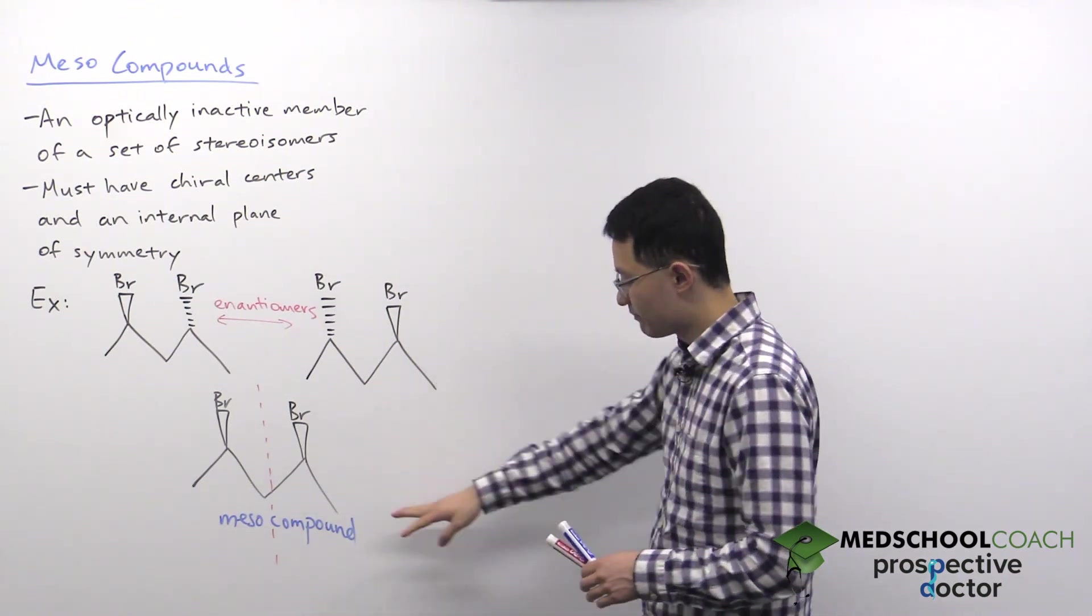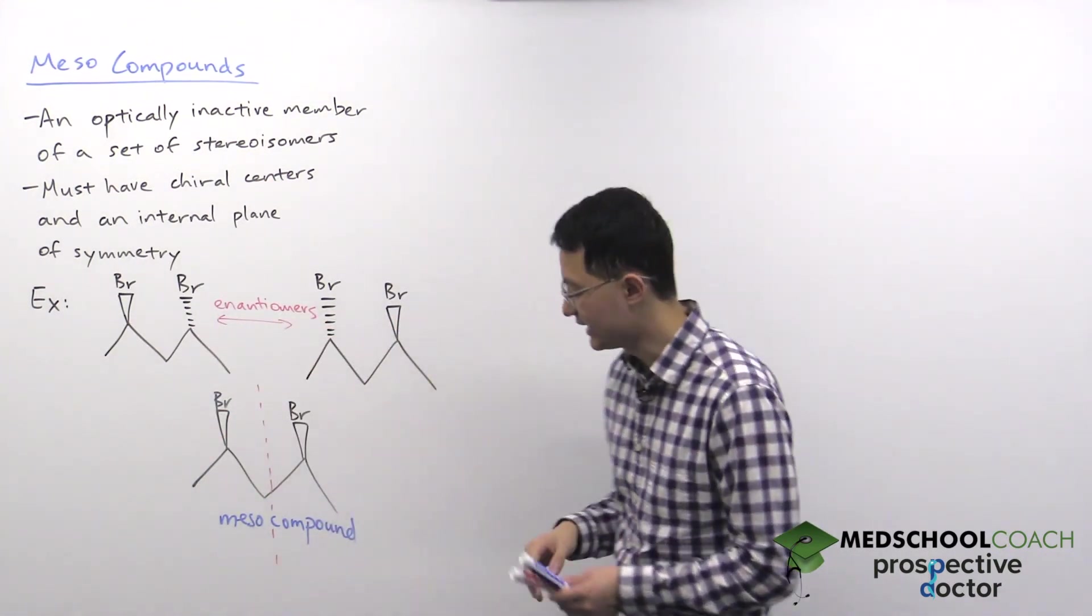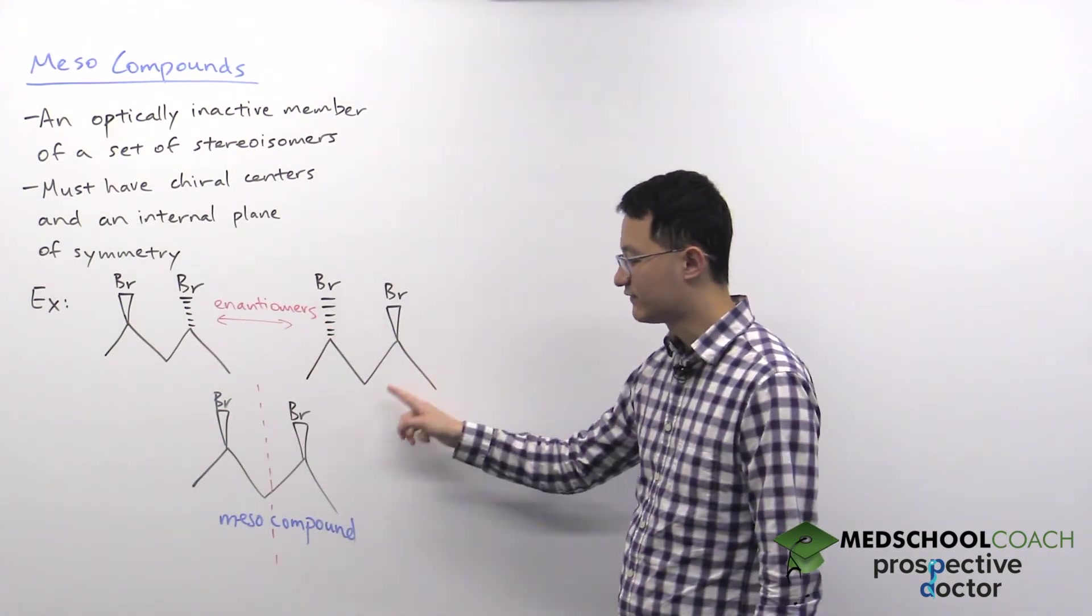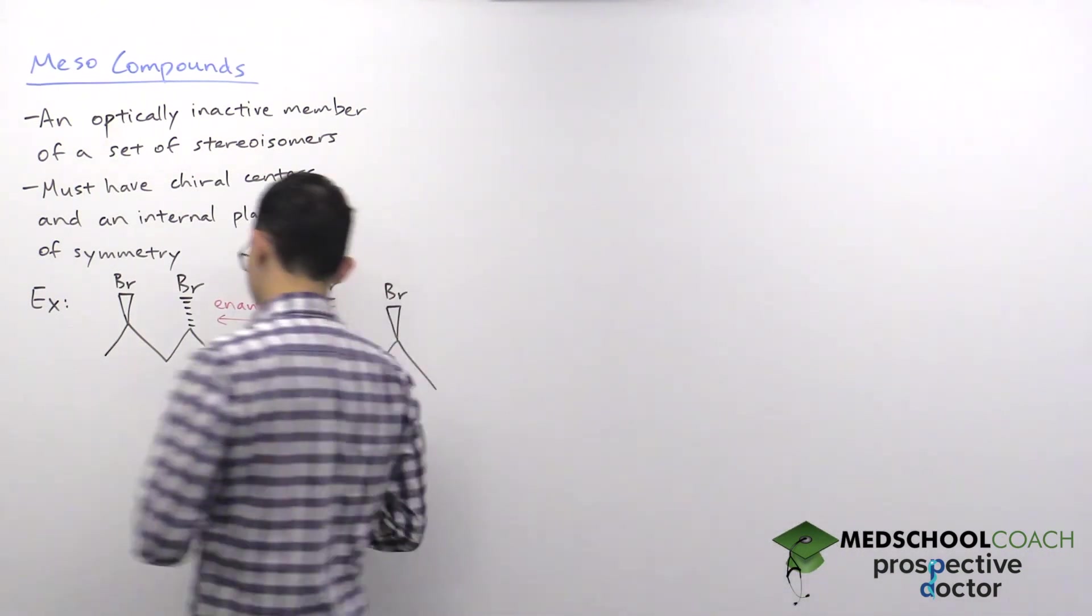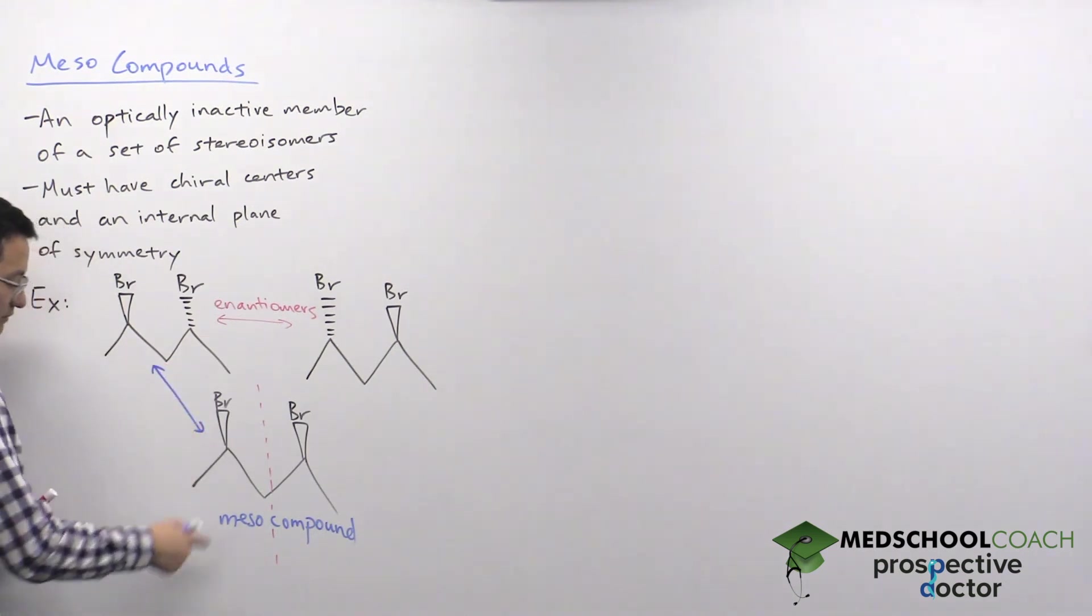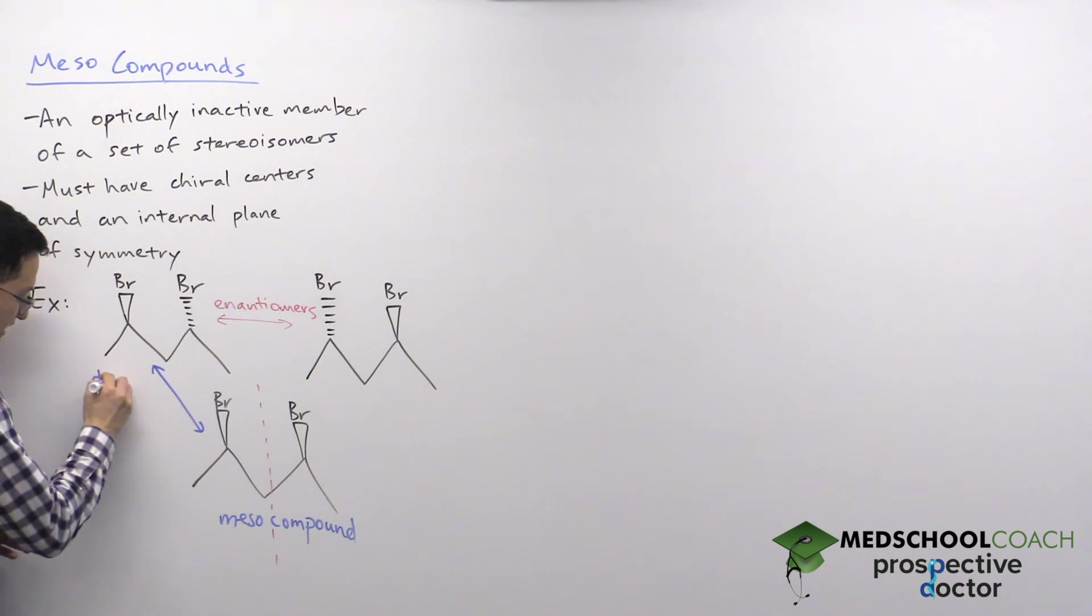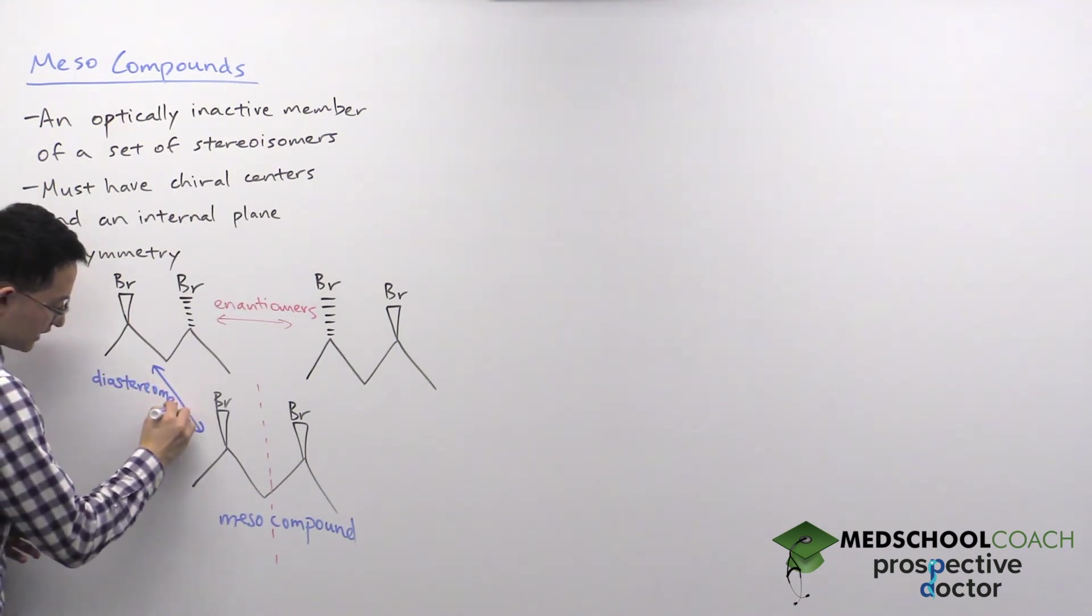Now when you compare this stereoisomer with the other members of the same set, you'll see that they have different absolute configurations that aren't the exact opposite, which explains why, as I mentioned earlier, meso compounds are an optically inactive member of this set. And with other members, it's diastereomers.